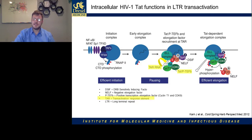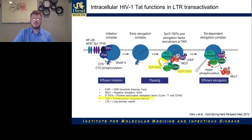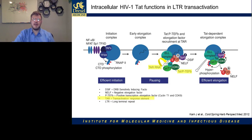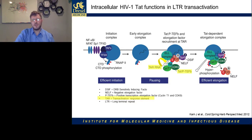HIV transcription is often very leaky and not very efficient. However, when TAT is able to bind to the TAR RNA — a very immature, one of the first parts of the viral transcripts — it stabilizes its complex with PTEF-B, allowing for longer transcripts to be created, which in turn creates more TAT, which in turn creates more transcription, creating a positive feedback loop which can allow this virus to escape latency.